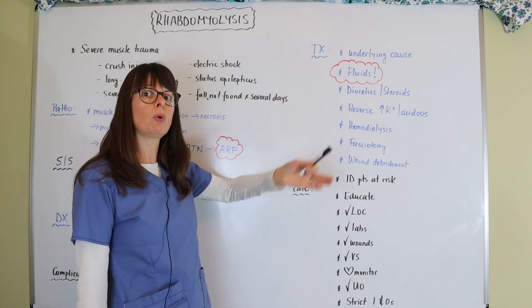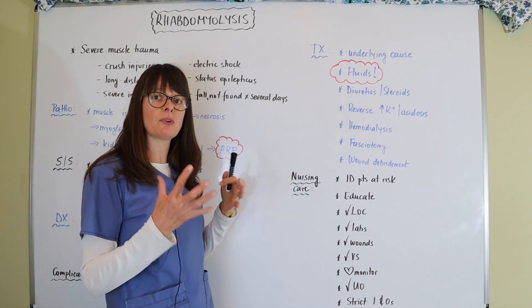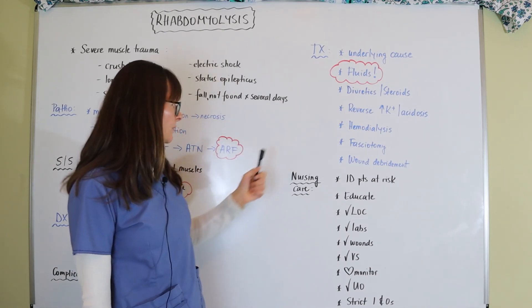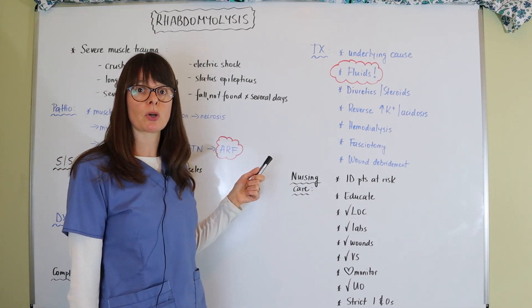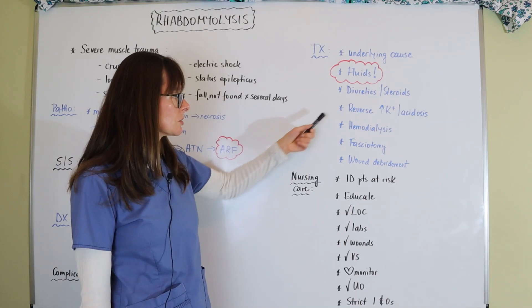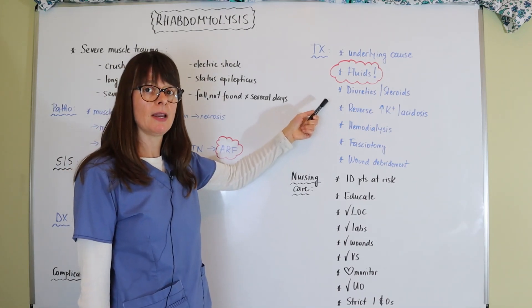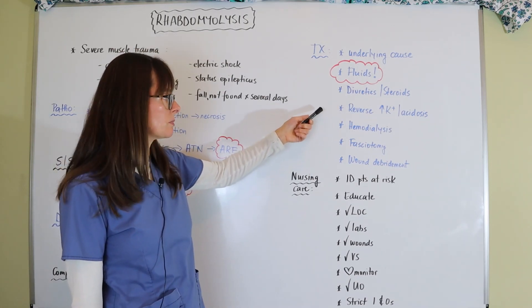Diuretics to help pull the fluid off. Steroids to help with the inflammation that occurs in the kidneys. And then as we know with acute renal failure, anything that pertains to the kidney can lead to hyperkalemia as well as metabolic acidosis. So we want to reverse those. I have separate videos on hyperkalemia and metabolic acidosis where you can see what's being done there.